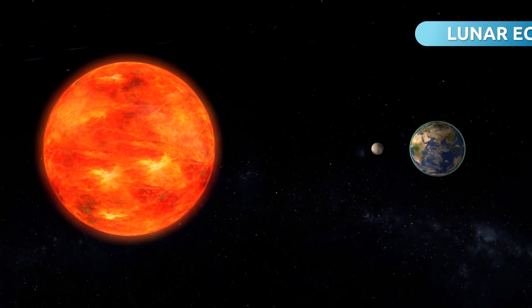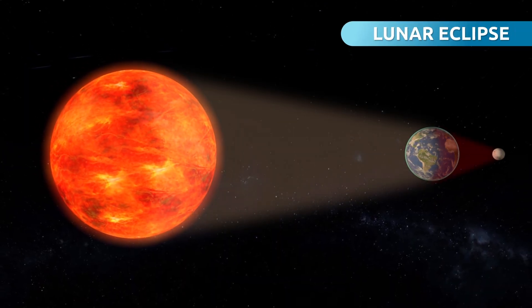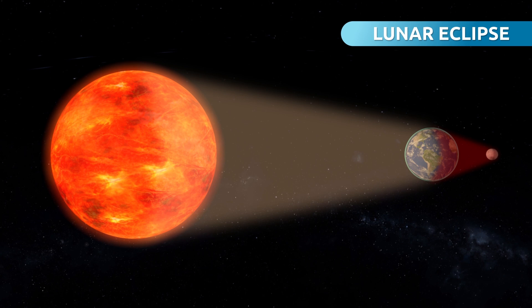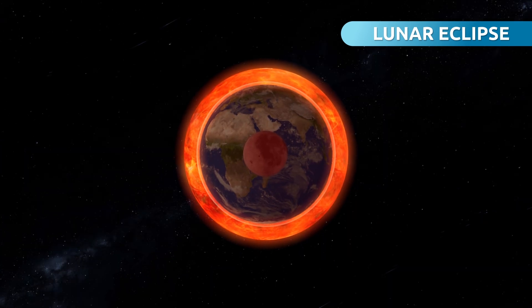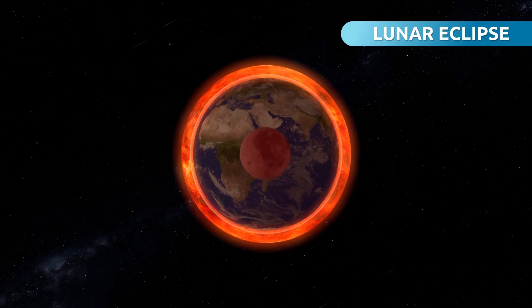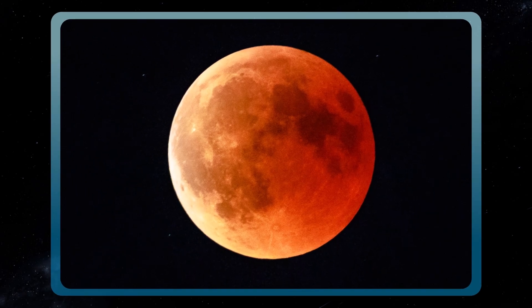During a lunar eclipse, the Earth positions itself between the Sun and the Moon, blocking sun rays from reaching the Moon. During the eclipse, a shadow is formed and the Moon becomes dark in our view, changing its color to red. This phenomenon is known as blood moon.